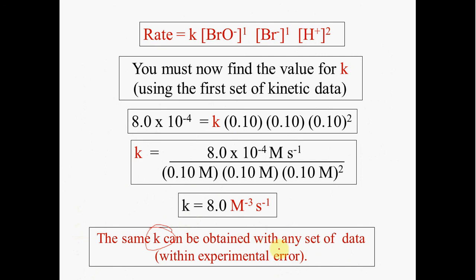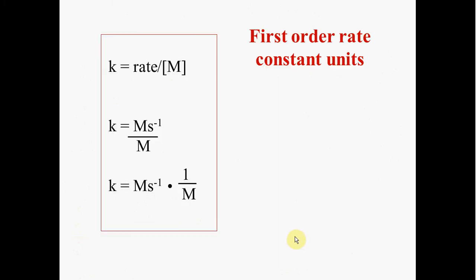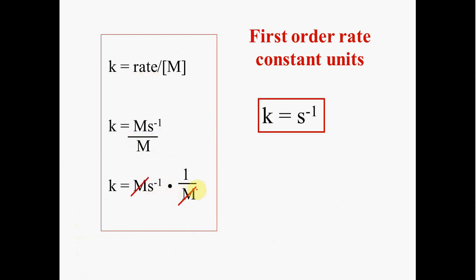The same k can be determined with any set of data, though it's standard to use the first set. Notice the unit for k is molarity to the negative 3 power over seconds. The rate law constant unit is always rate over molarity raised to whatever order you've determined. For first order, rate is molarity per second divided by molarity, which cancels to give inverse seconds.